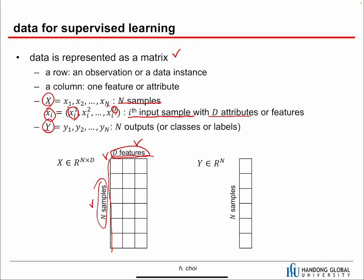Y is usually the output, and since we have N samples, we have N labels. For classification, each sample has one scalar — an index of a class like 3, 4, 1, or 5. For regression, we can have multiple outputs as a vector for one sample. So the scalar label is only for the classification problem.